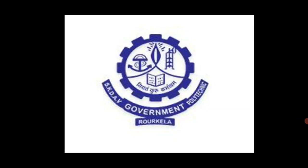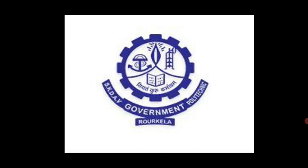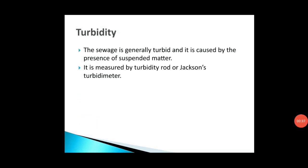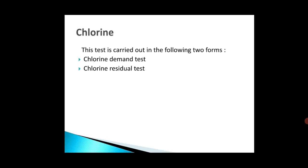Good morning. In the last class we discussed about the physical test of sewage, and today we will discuss about the chemical test of sewage. The chemical test of sewage is carried out for the determination of the following factors: chlorine, fat, grease and oil, nitrogen, dissolved oxygen, BOD, COD, pH value, and total solids.